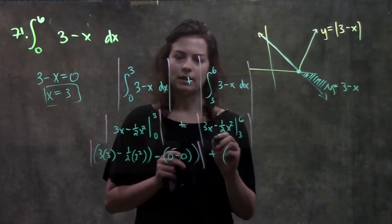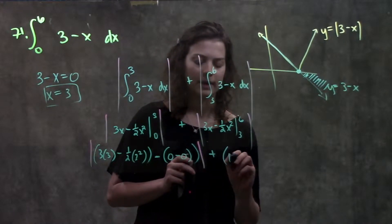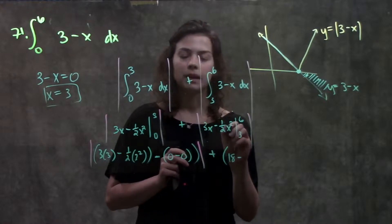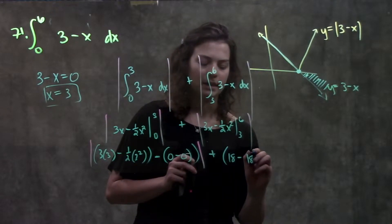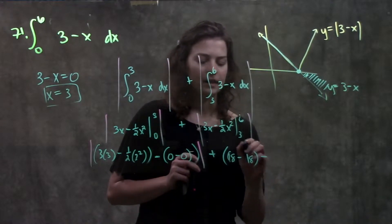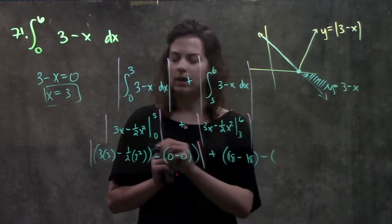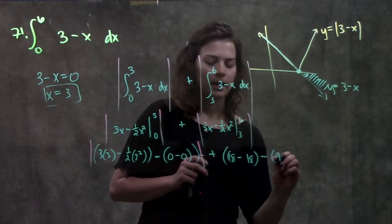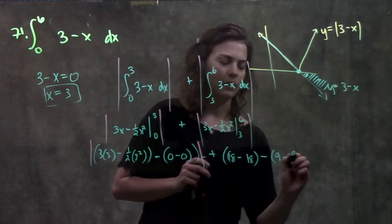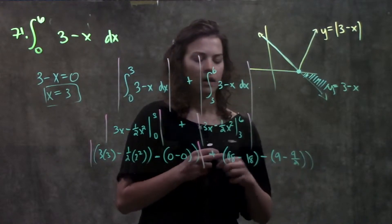Plus, same thing here, plug in my six. I'm going to go ahead and solve some of this out. Three times six gives me 18, minus one half times six squared will also give me 18. Minus whatever I get when I plug in three. And when I plug in three, I get nine minus one half times nine, or nine over two.